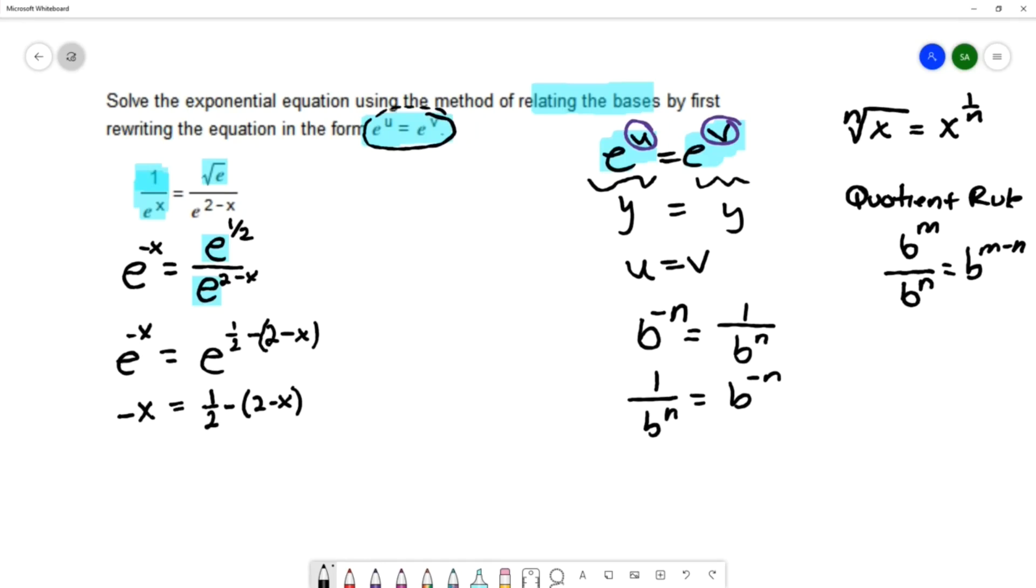And I'll solve this equation. I'm going to start by using the distributive property on this negative. That gives -x = 1/2 - 2 + x. I don't like it when I have fractions in my problems. So the next thing I'll do is I'll multiply every term by 2 to clear out the fractions. That would give -2x = 1 - 4 + 2x.